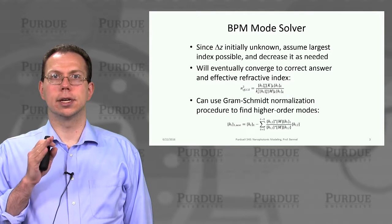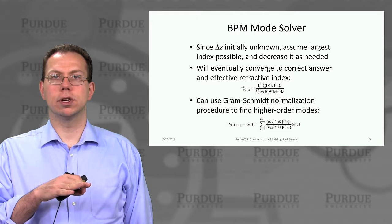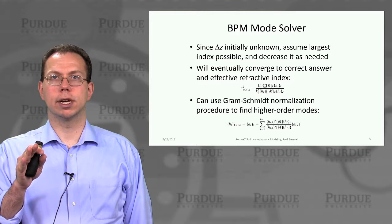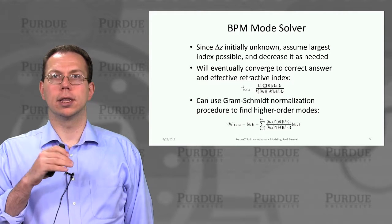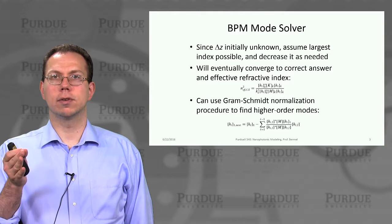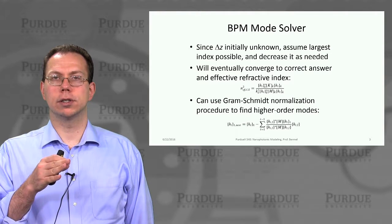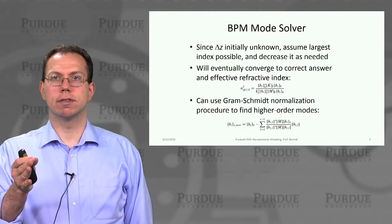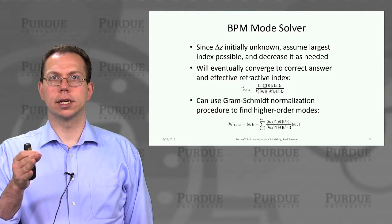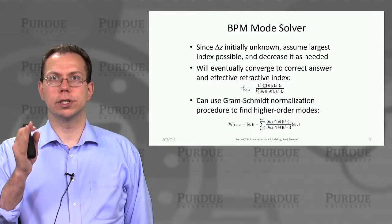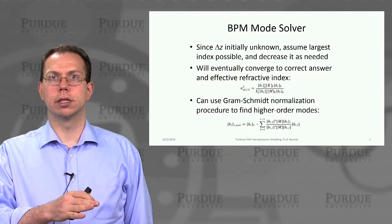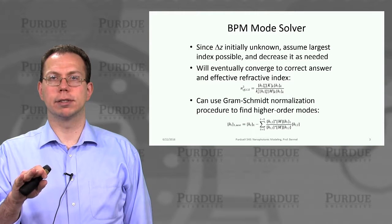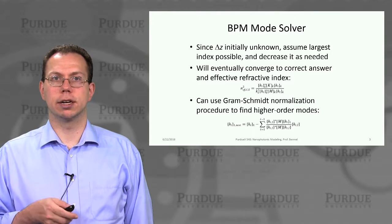Once we have that first solution for the first mode, we can orthogonalize any other solutions using the Gram-Schmidt procedure, which is also widely used in quantum mechanics. We take a trial solution, project it onto the solution found for the first mode, and then subtract that projection from the trial solution. Anything left over would be purely along the lines of other possible solutions, and we can repeat that over and over again with high accuracy.